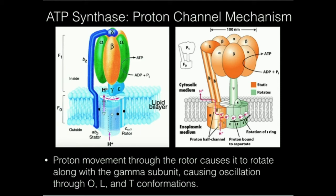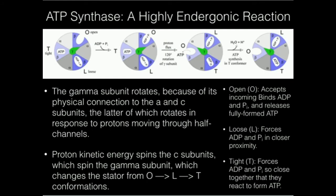The net spin is 120 degrees per rotation event. Since there are 360 degrees in a circle, that means the gamma subunit has three possible main conformations — it's either at 120 degrees, 240 degrees, or 360 degrees. This gamma stalk is going to spin against and grind against the alpha and beta subunits. As we'll see, there are three conformations of the alpha and beta subunits: O, L, and T, which stand for open, loose, and tight. We're going to look at that here.